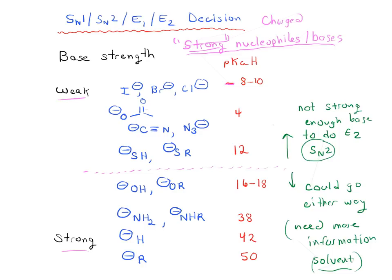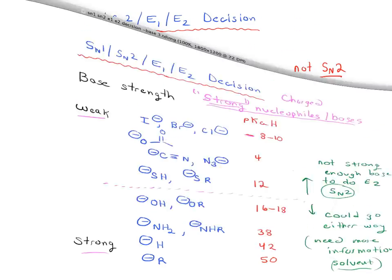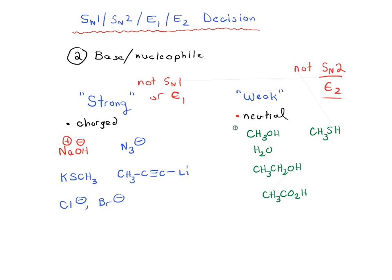Bottom line for this video here is just look at the nucleophile, decide whether it's charged or neutral. If it's charged, you're going to rule out SN1 or E1. So in other words, it's going to be SN2 or E2. If it's weak, it's not going to be SN2 or E2. So you're going to look at SN1 or E1. In other words, you're going to form a carbocation. That's the way to ask about the base and nucleophile question. In the next video, we'll really go through how to look at the solvent and what that can tell us about the SN1, SN2, E1, E2 decision.